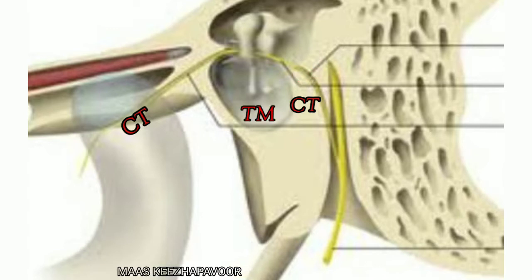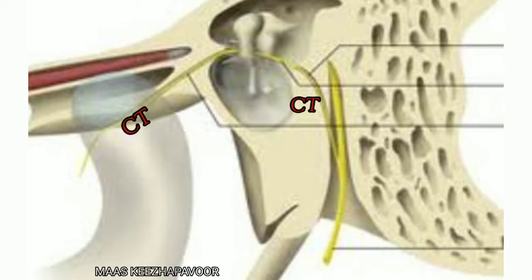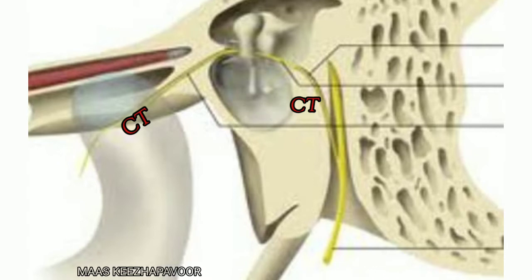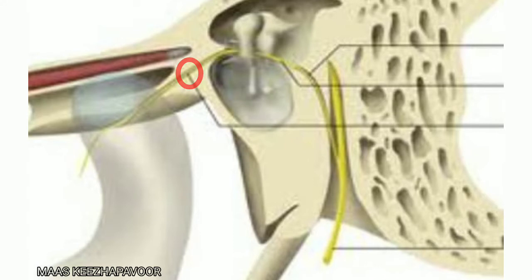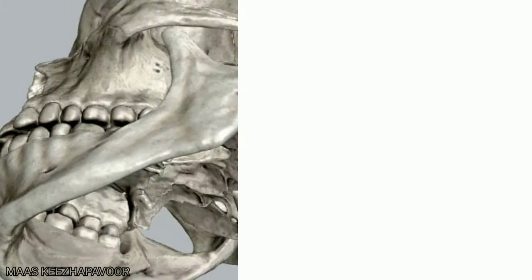It runs medial to the upper part of the tympanic membrane. It passes between the fibrous and mucous layers of the tympanic membrane, medial to the handle of malleus. It exits from the middle ear cavity through the anterior canaliculus at the medial end of the petrotympanic fissure.